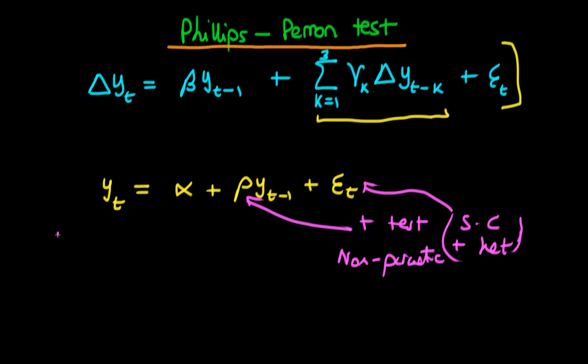Just like the augmented Dickey-Fuller test, the null hypothesis is that we have a unit root, so rho equals 1 against the alternative which is rho is less than 1. Also, much like the Dickey-Fuller test regression, we can choose to include a linear time trend and we can choose whether or not we want to include a constant alpha.